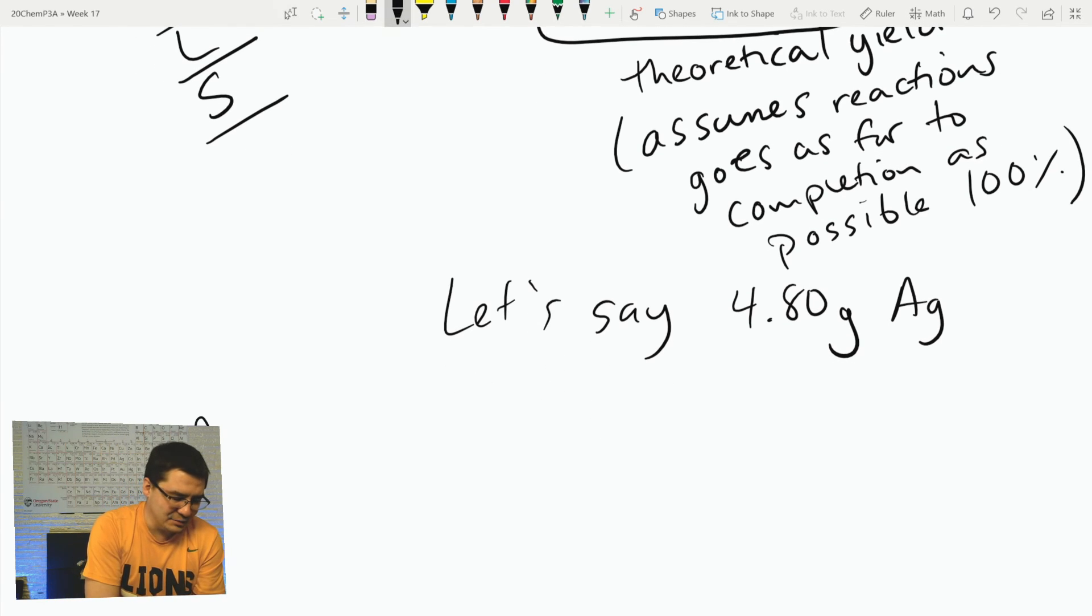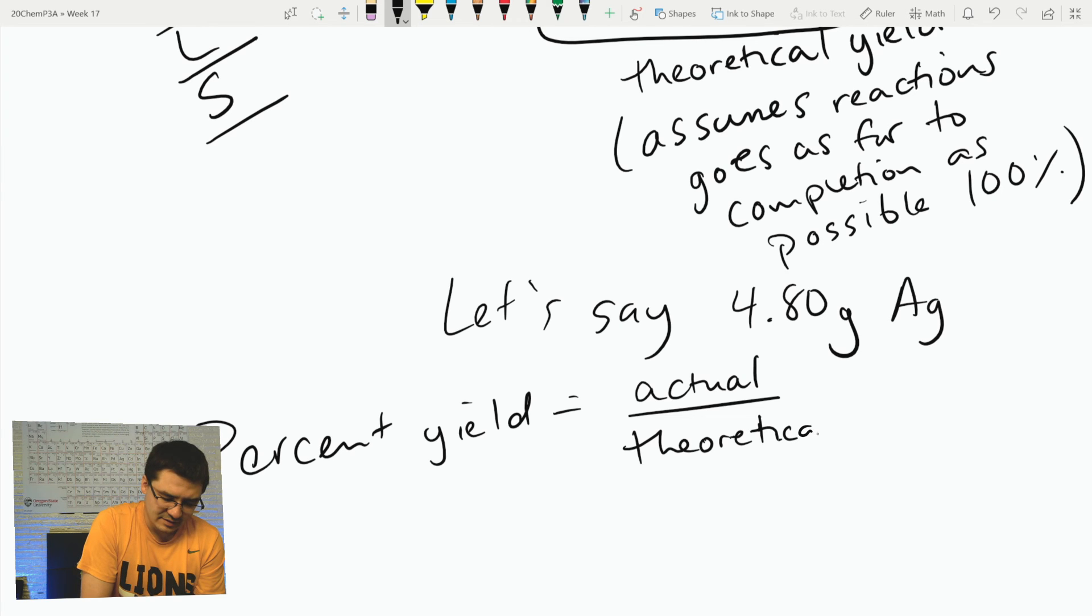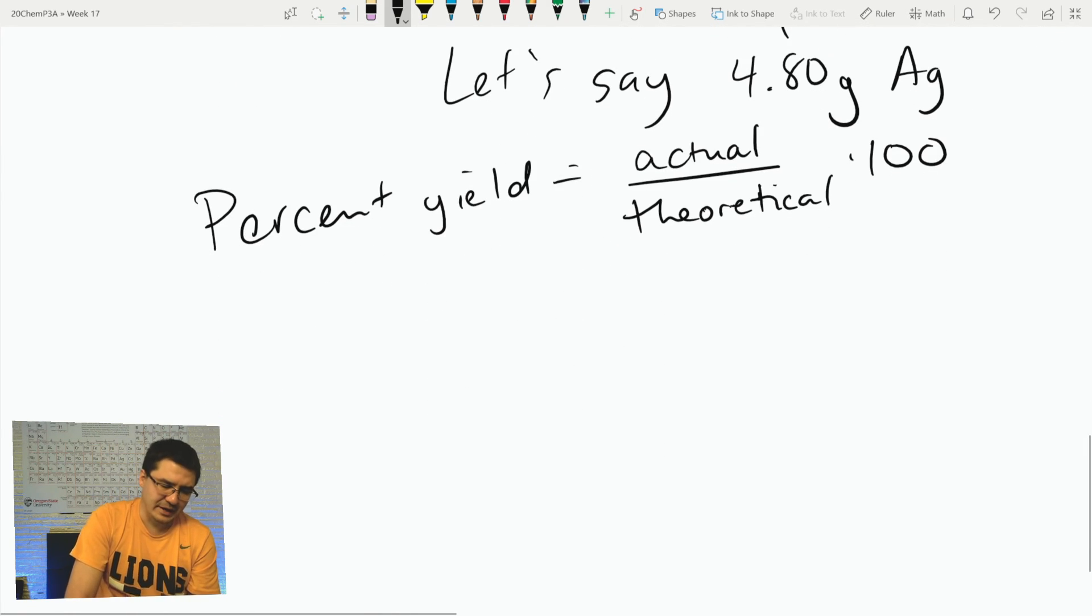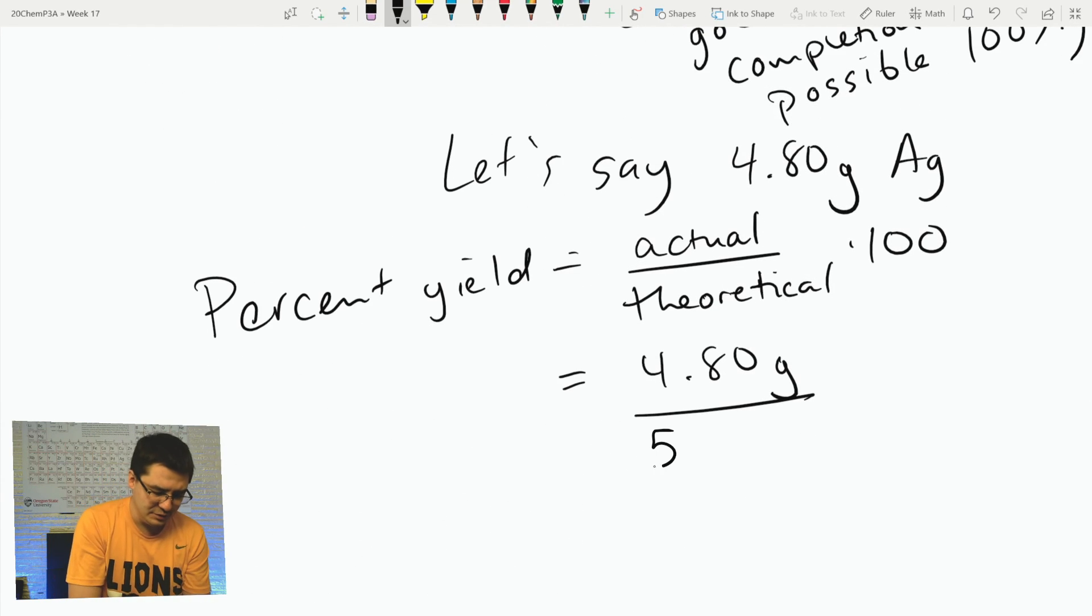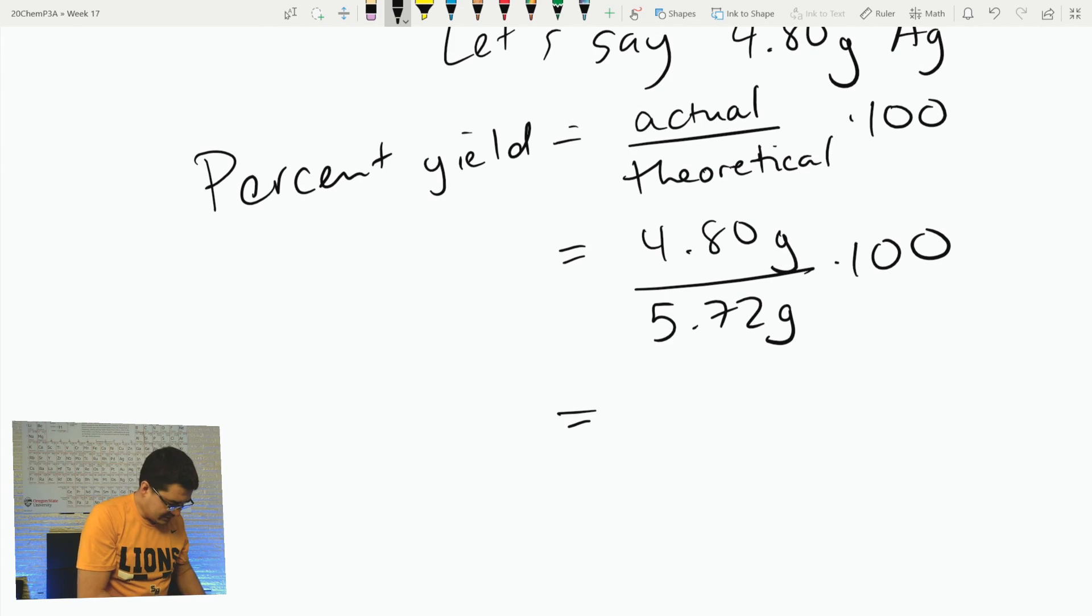That's the theoretical max. If you could collect all that you knew you would get. So let's say I only got 4.8 grams of silver. To calculate the percent yield, you take the actual divided by the theoretical and then convert it to a percent by multiplying by 100. So if I actually in the lab was to collect 4.8 grams but we were supposed to get based on theory 5.72, then that's equivalent to a percent yield of about 83.9%.